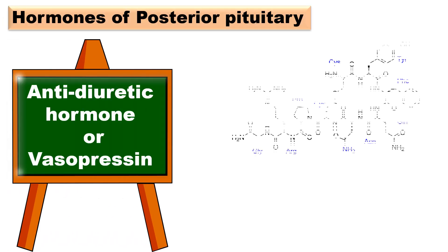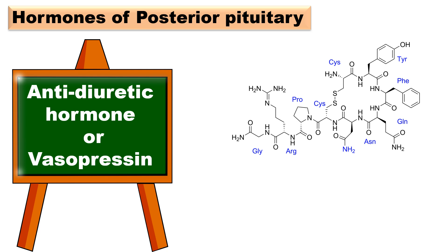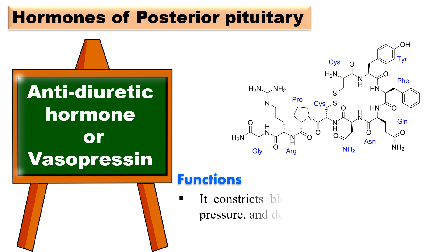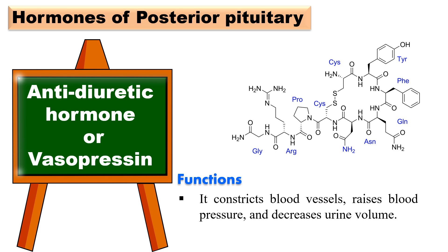The hormones of the posterior pituitary include antidiuretic hormone (ADH) or vasopressin. ADH consists of 9 amino acids with the sequence: cysteine, tyrosine, phenylalanine, glutamine, asparagine, cysteine, proline, arginine, and glycine. The two cysteine residues form a disulfide bond. The C-terminal of the sequence is converted to a primary amide as seen in the structure. Its function is to constrict blood vessels, raise blood pressure, and decrease urine volume.